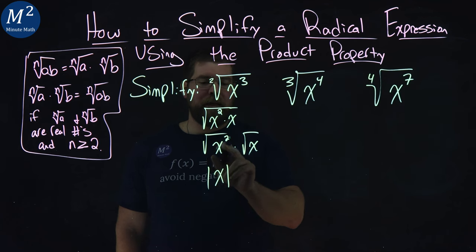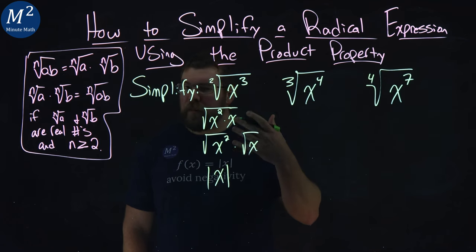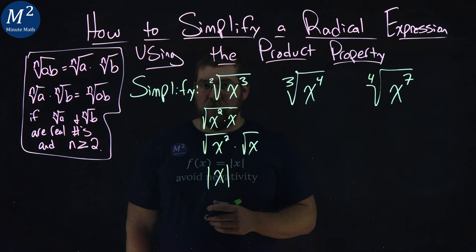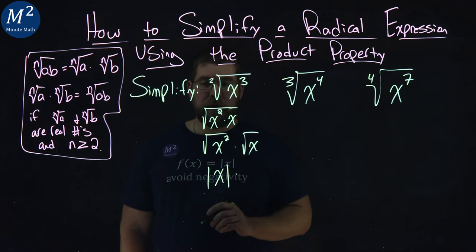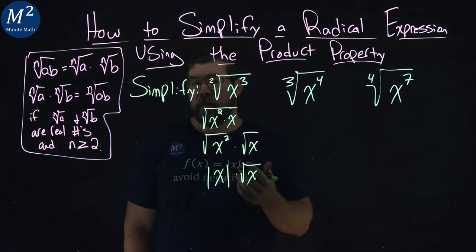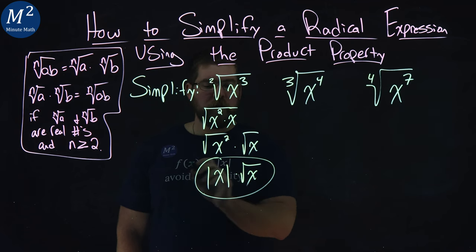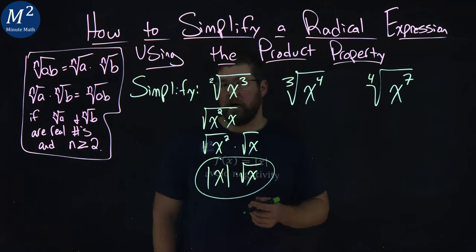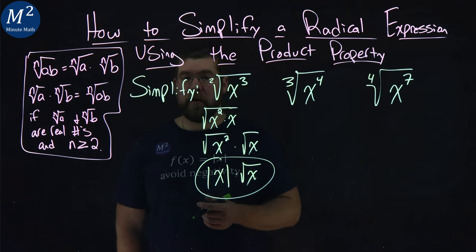So because we have that going on, especially with our even powers, we have to use the absolute value symbol. From here, absolute value of x times square root of x, and that's it. That's all we can simplify. So the first one simplifies to be absolute value of x times the square root of x.